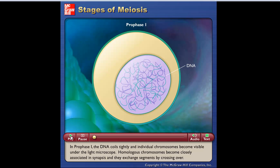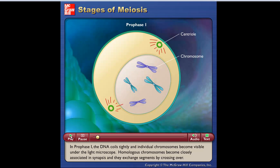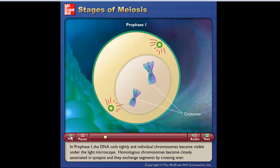In prophase I, the DNA coils tightly and individual chromosomes become visible under the light microscope. Homologous chromosomes become closely associated in synapsis and they exchange segments by crossing over.